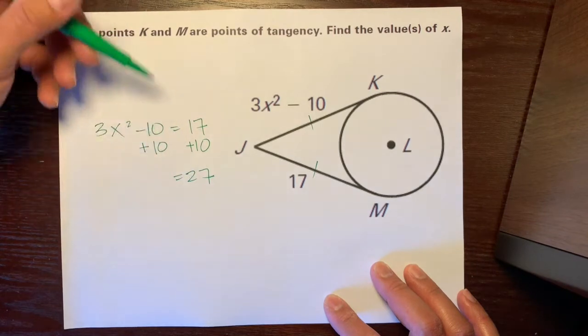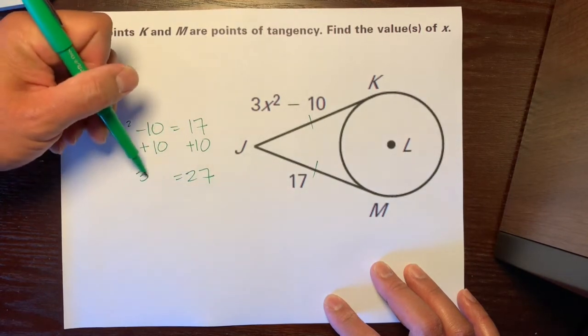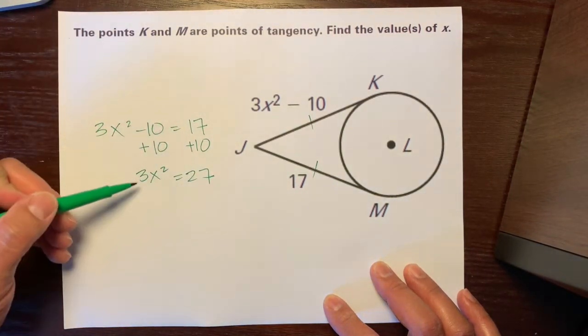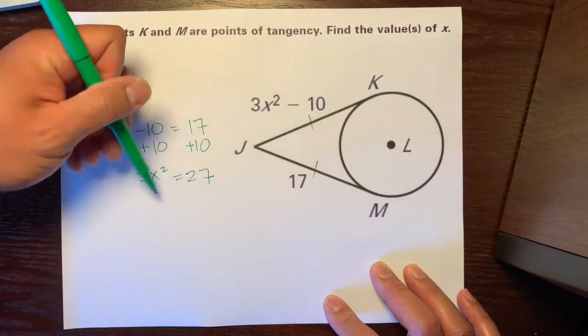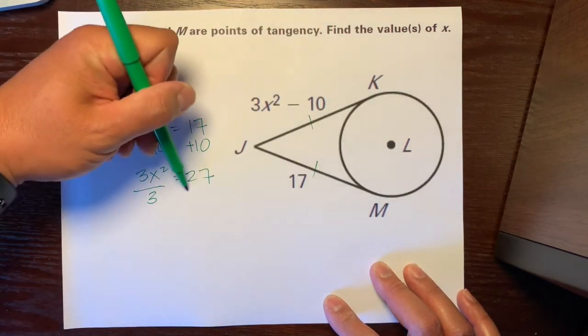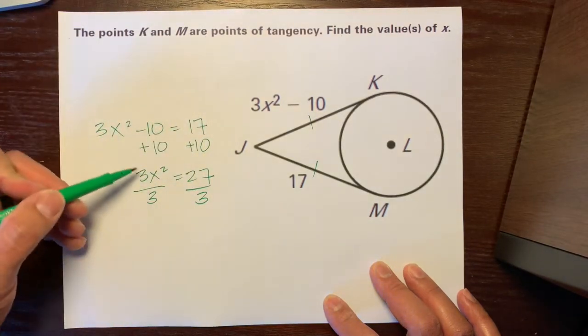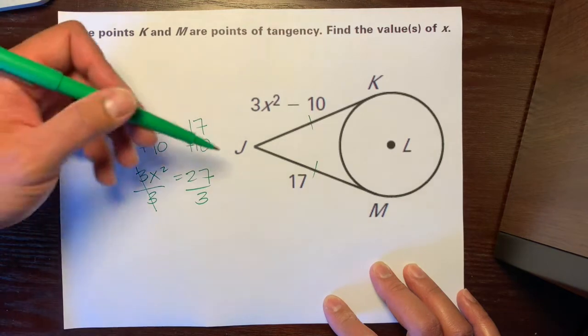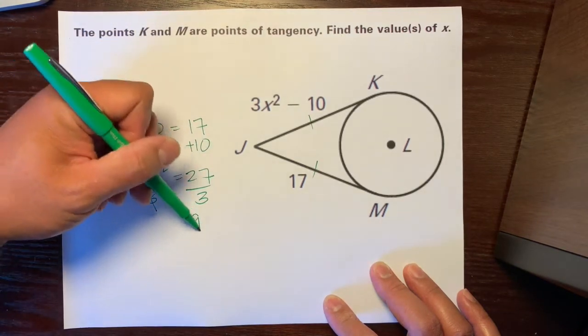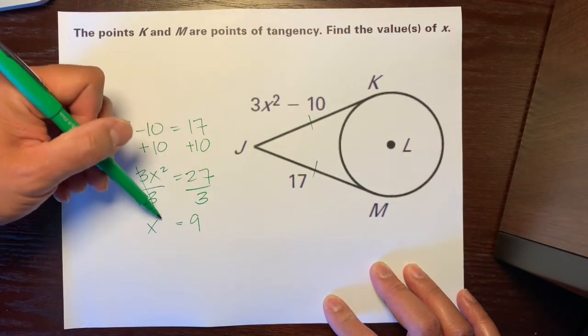27, and I'm just counting with my fingers, and we'll bring down that 3x squared. This 3 is multiplying the x squared. So, opposite of multiplication is division. So, we want to get rid of that 3. So, we'll divide it on both sides. 27 divided by 3 is 9 is equal to x squared.